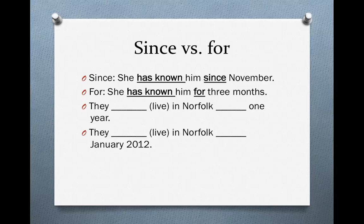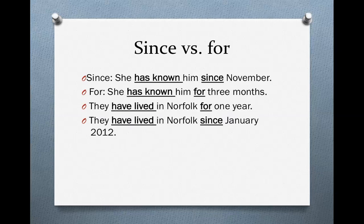You do the next one. Fill in the correct form of the verb, and choose since or for. Let's look at the answers. They have lived in Norfolk for one year, because it's a length of time. They have lived in Norfolk since January 2012. That's a specific date. So we use since.